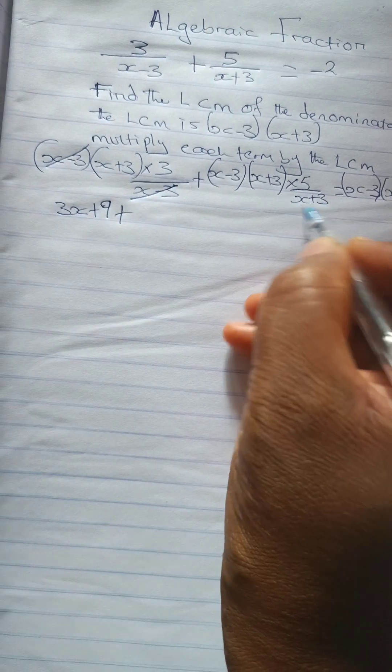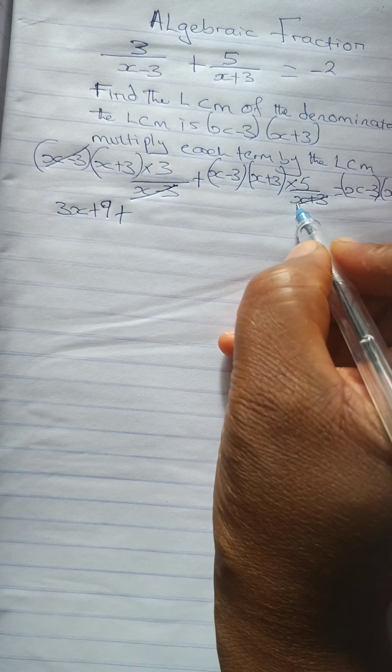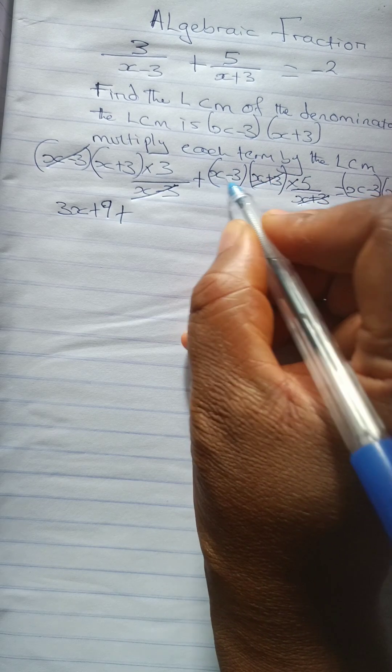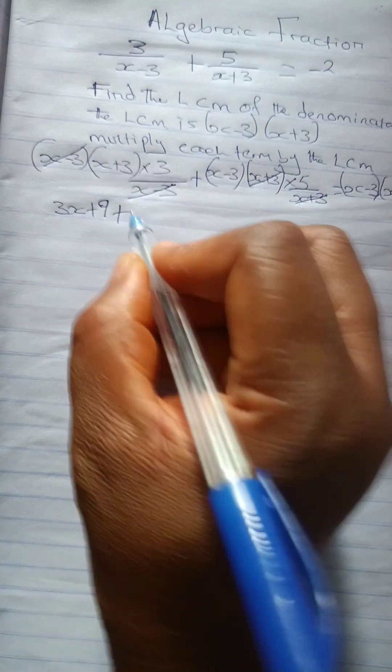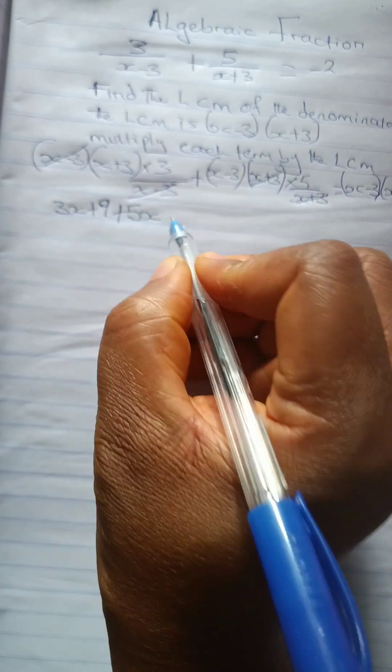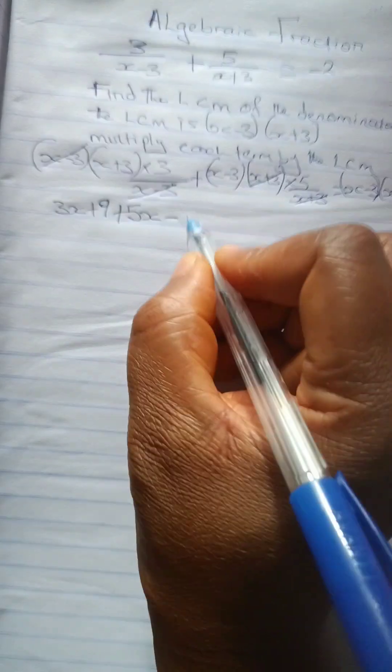Now plus. x plus 3 can cancel out, meaning can divide through this. And we'll be left with x minus 3 times 5. So 5 times x is what? 5x minus 5 times 3 is 15.